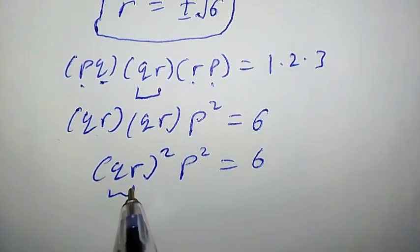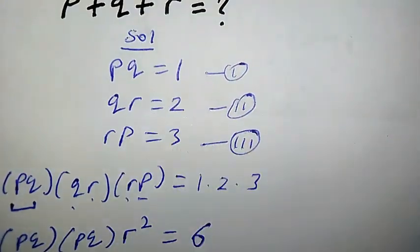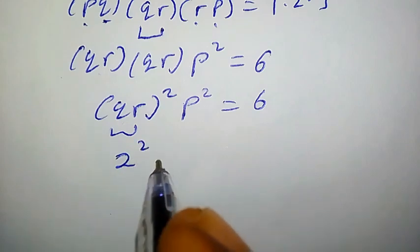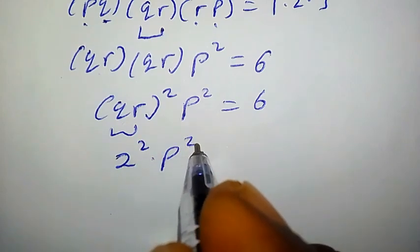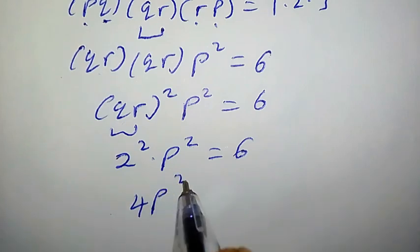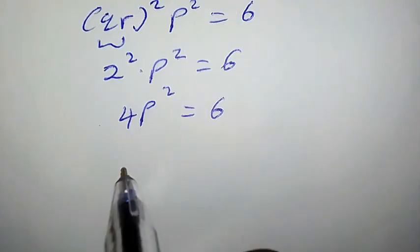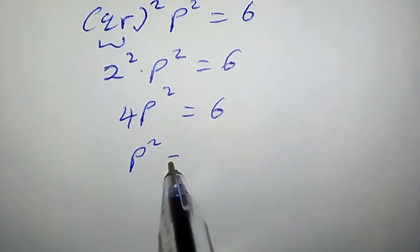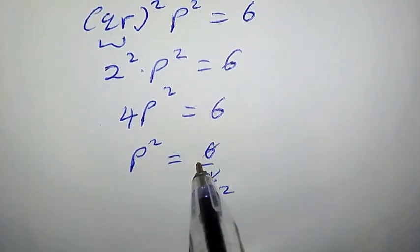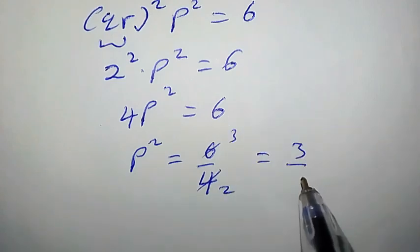But what is QR? QR equals 2. We can plug that in. So we have 2 squared times P squared equals 6. 2 squared is 4, so 4P squared equals 6. Dividing both sides by 4, we get P squared equals 6 over 4, which simplifies to 3 over 2.